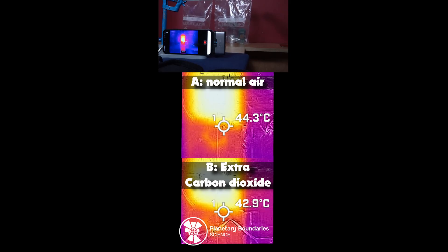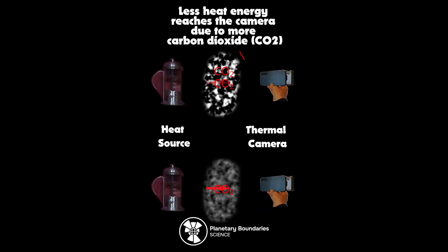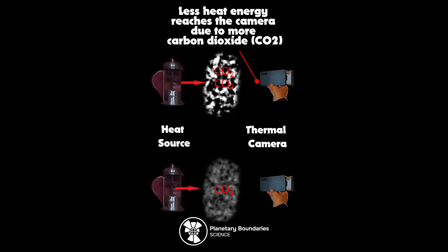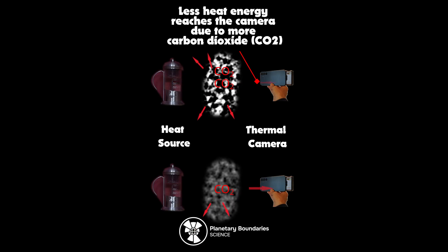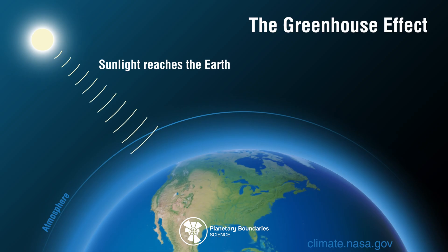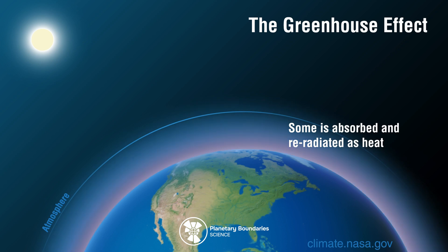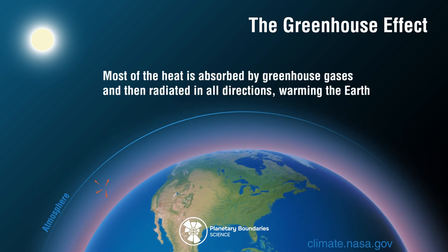The lower temperature reading shows that some of the infrared radiation coming from the hot water is being blocked or redirected from reaching the camera. The extra carbon dioxide is interacting with the infrared radiation and stopping it from reaching the camera — the carbon dioxide is acting like a blanket. The blanket effect of the carbon dioxide and other greenhouse gases interacting with radiation going from the surface back to space is to raise the altitude at which radiation can escape back into space, and this makes the Earth warmer than it would otherwise be.